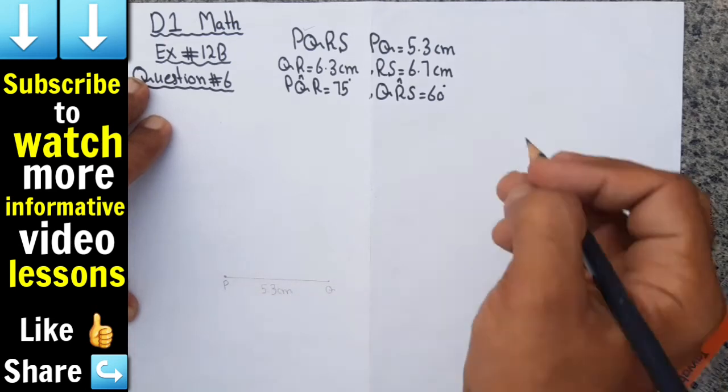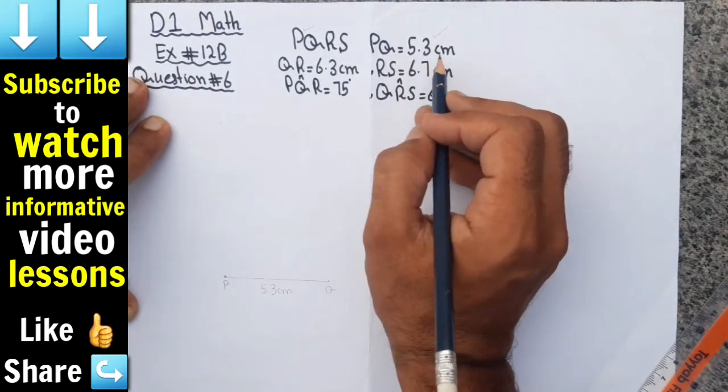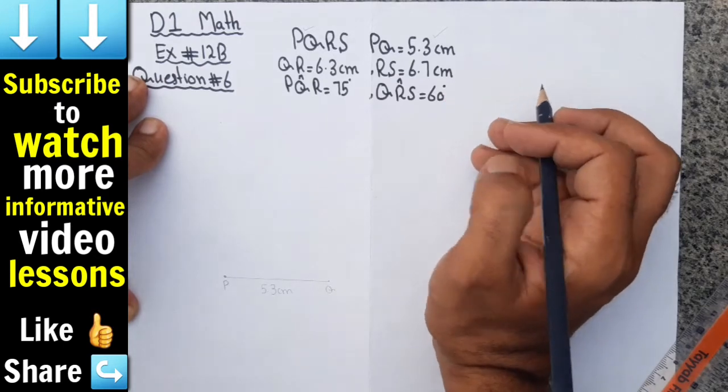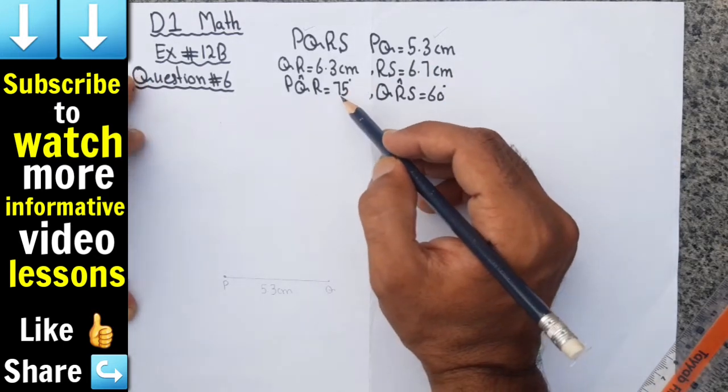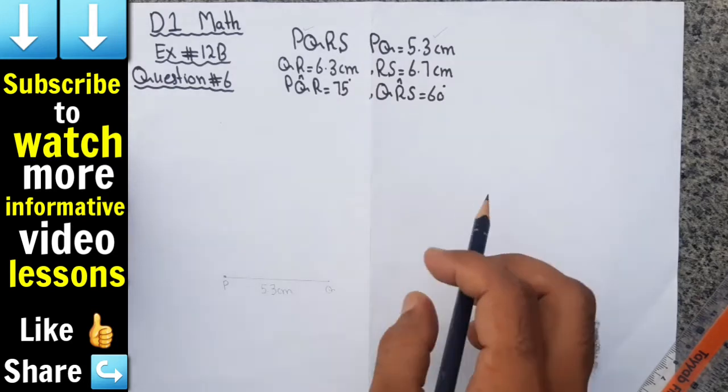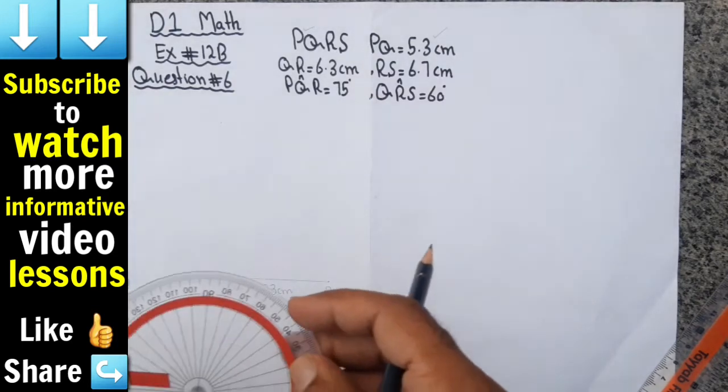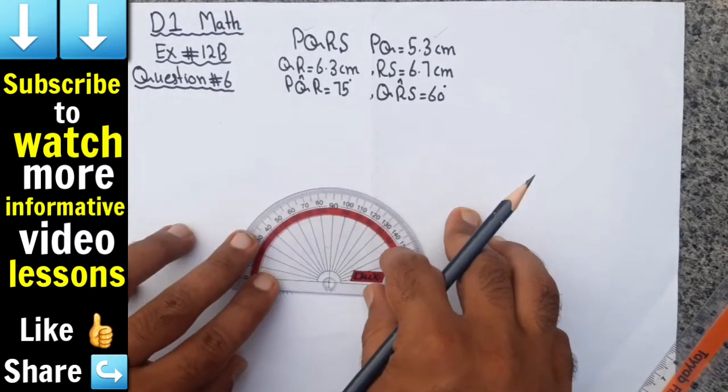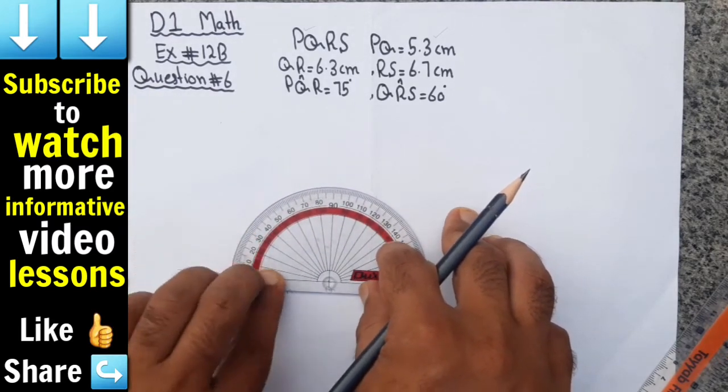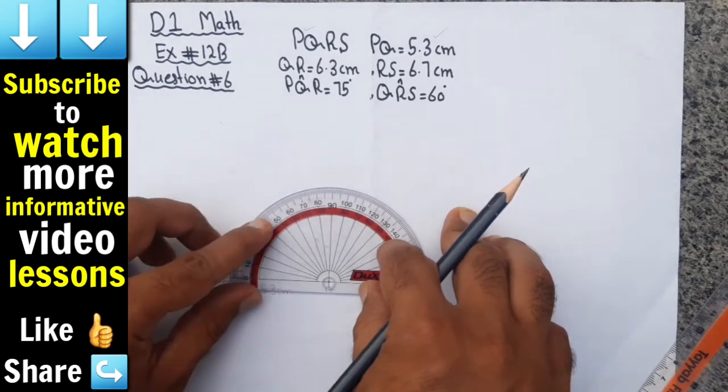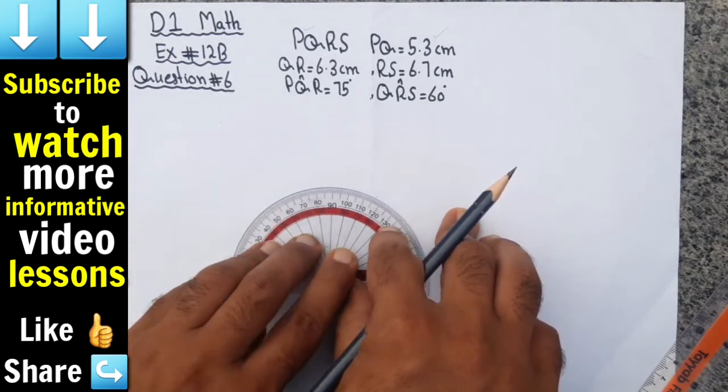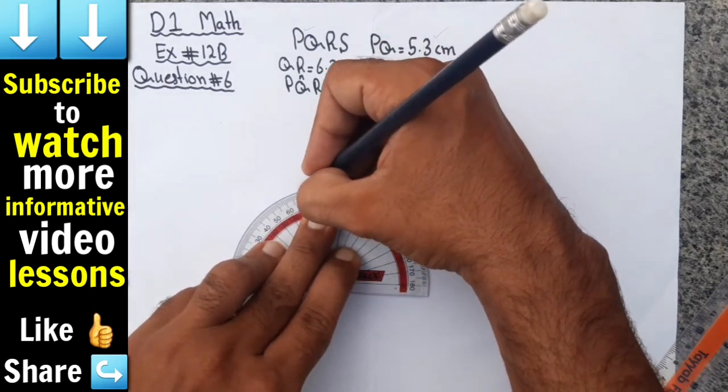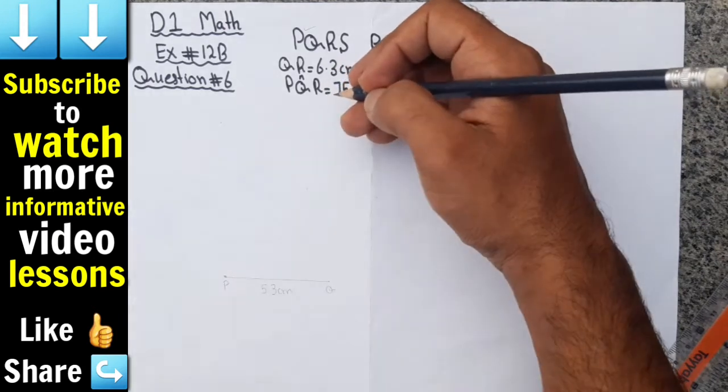Now we have drawn PQ equal 5.3 centimeter. As you can check, the angle at point Q equals 75 degrees. Now we will draw 75 degree angle at point Q with the help of protractor. We will draw 75 degree angle, so this is the 75 degree line.